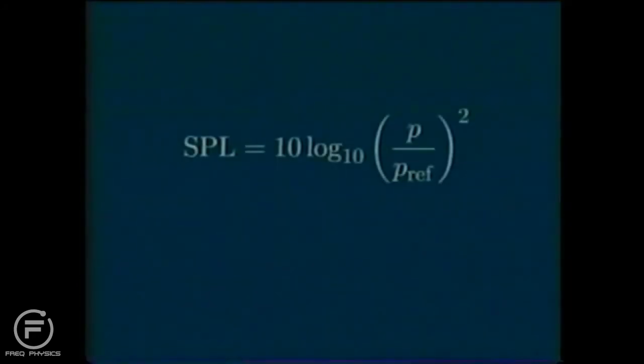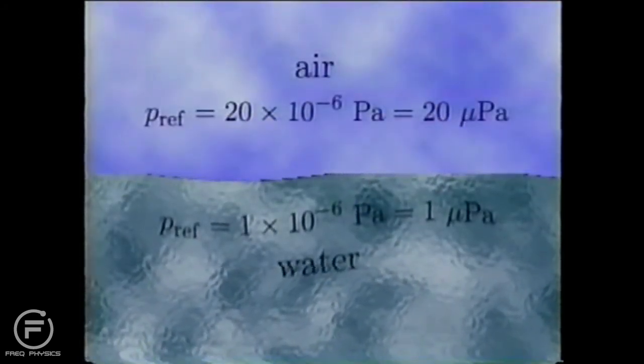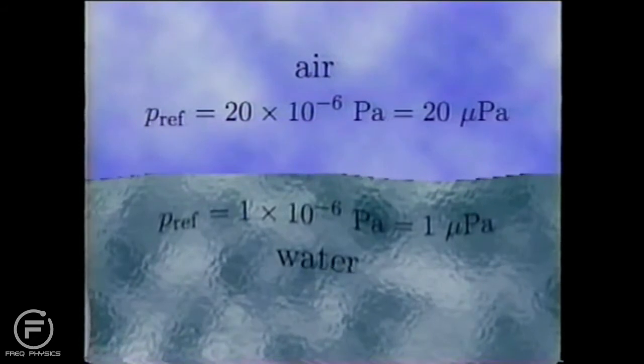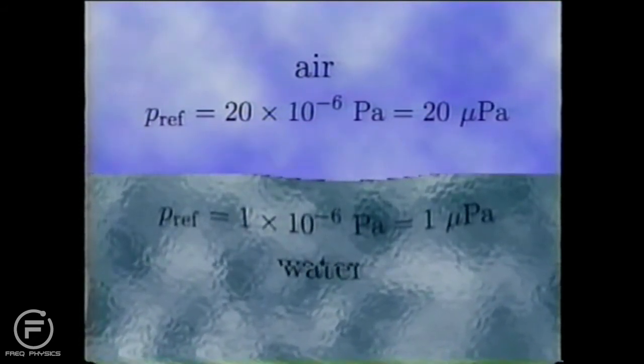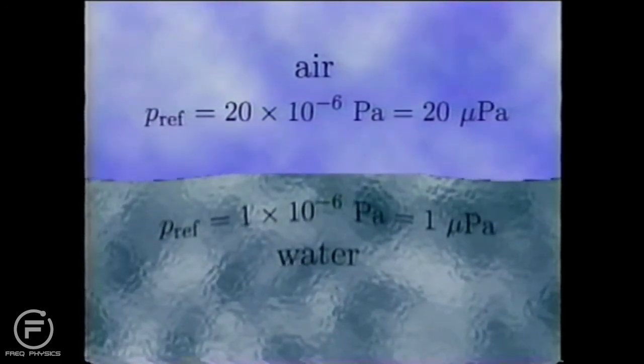The equation for converting pressure to sound pressure level, abbreviated SPL, is SPL equals 10 log p over p ref squared. In this equation, p is a time averaged pressure. And p ref is the reference pressure, a quantity that depends on the medium in which the sound wave is propagating. In water, p ref equals one times ten to the negative six pascals, which equals one micropascal. In air, p ref equals twenty micropascals. This is the pressure value which represents the threshold of unimpaired human hearing for a one kilohertz tone. In other words, the quietest audible sound at that frequency.